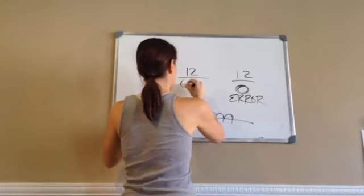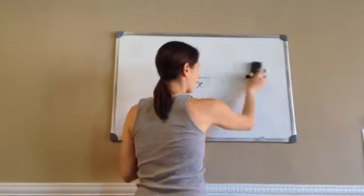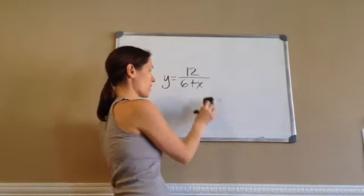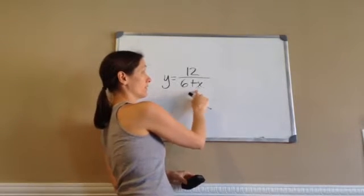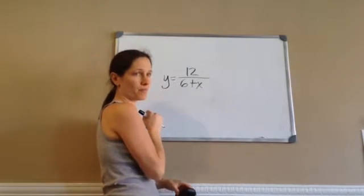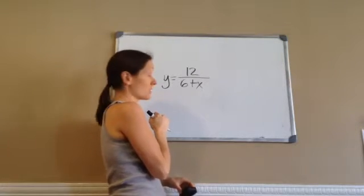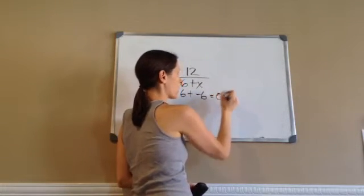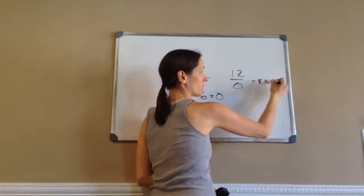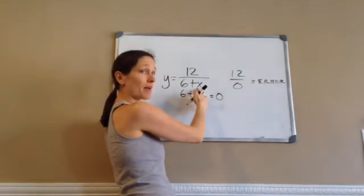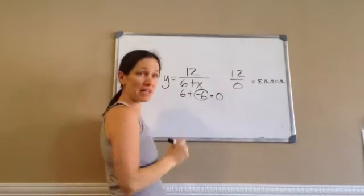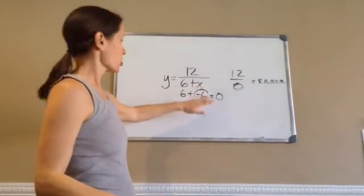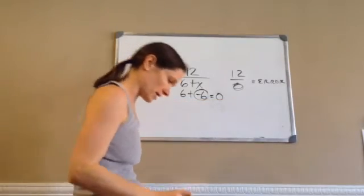What if this was 6 plus x? What would you do? What can x not be? Anything negative? No. Just one number. What equals 0? Right here. 6 plus what equals 0? Negative 6. Very good. So, if it's 6 plus negative 6, that would give us a 0. And 12 divided by 0 is error. So, what can x not be? x cannot be a negative 6 because then we'll get a 0 as an answer. You can't have that. So, when they're asking you what can this not be, you have to think they're saying what equals 0, basically.